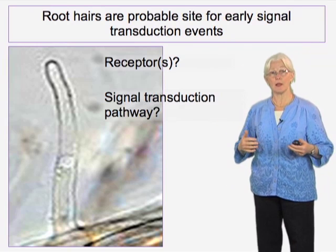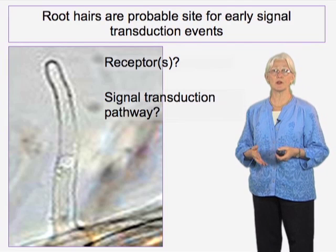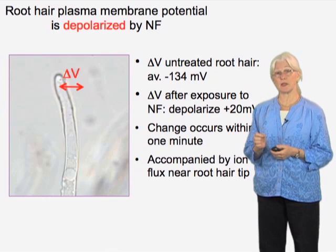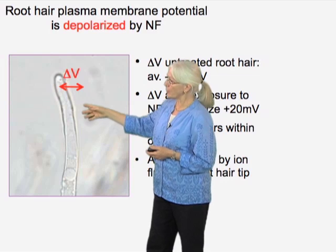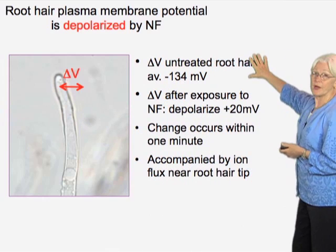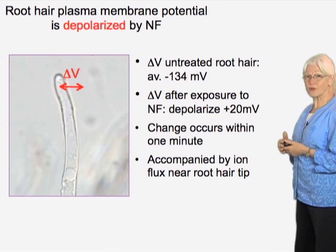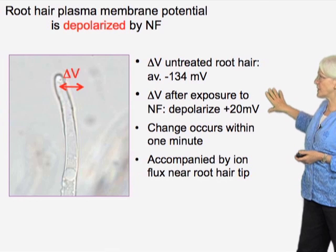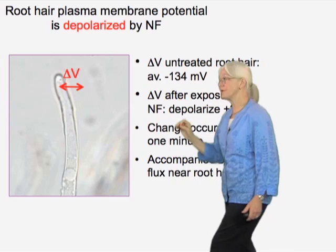Signal transduction is often a complex and fairly rapid multiprotein process. We set out to look for events in root hairs that are cell-autonomous and fairly rapid. One of the earliest studies was simply to look at the electrochemical potential across the plant membrane. Taking a single root hair and putting in a microelectrode, we found that untreated root hairs have a stable, very negative potential at about 130 to 140 millivolts. However, if we treated a root hair with rhizobium, the rhizobium and its nod factor cause a depolarization of that plasma membrane, and that happens within a minute.